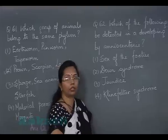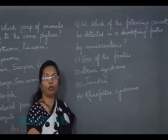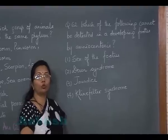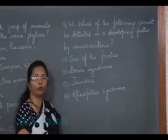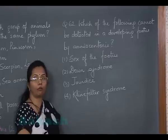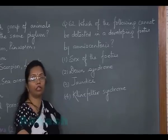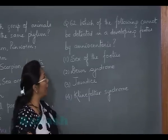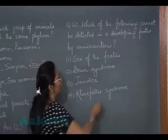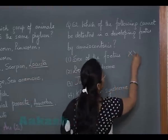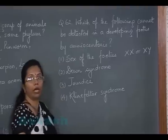Now question number 62: which of the following cannot be detected in a developing fetus by amniocentesis? Amniocentesis is a technique to check prenatal status where a small amount of fluid is extracted from the amniotic sac. It contains sloughed-off cells of the fetus which can be tested. From those cells, the sex of the fetus can be found out — either XX or XY condition.